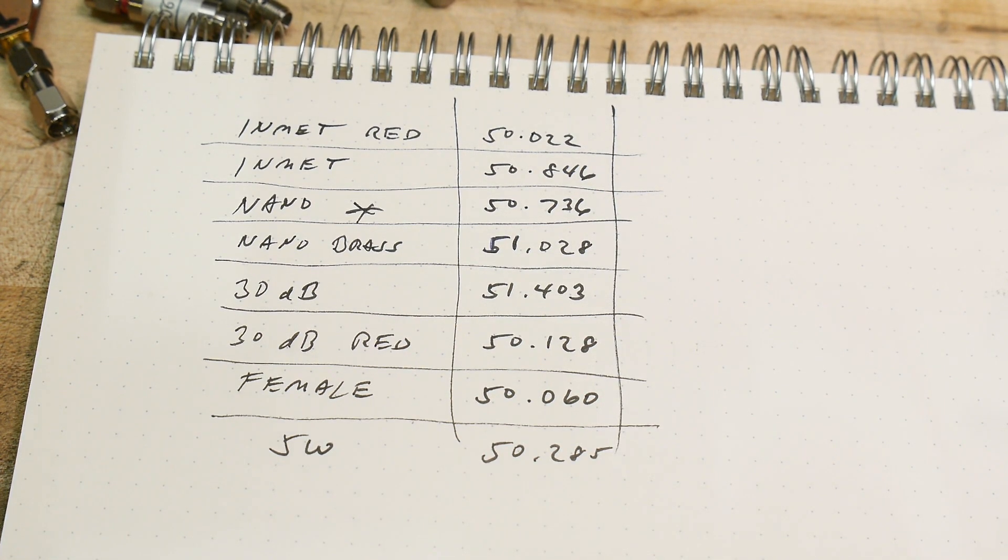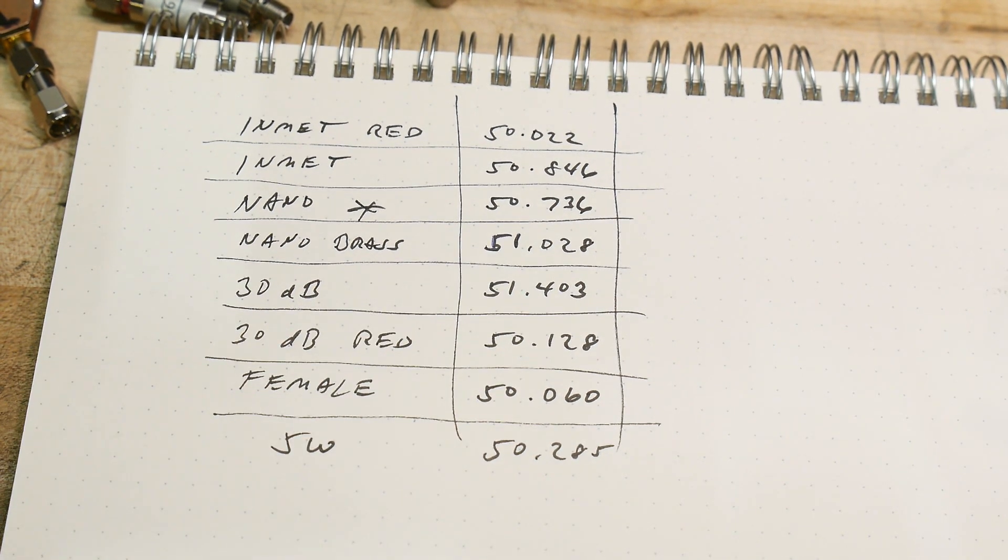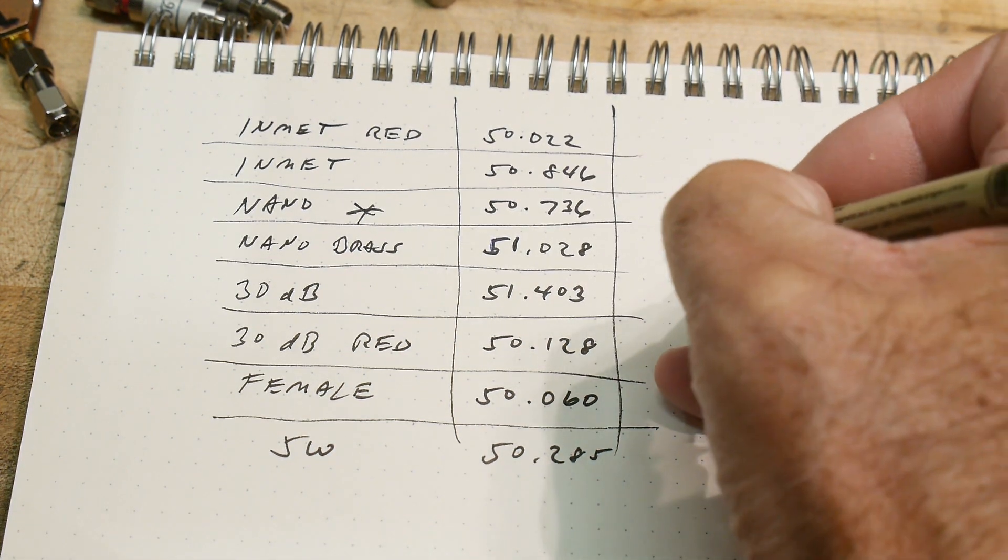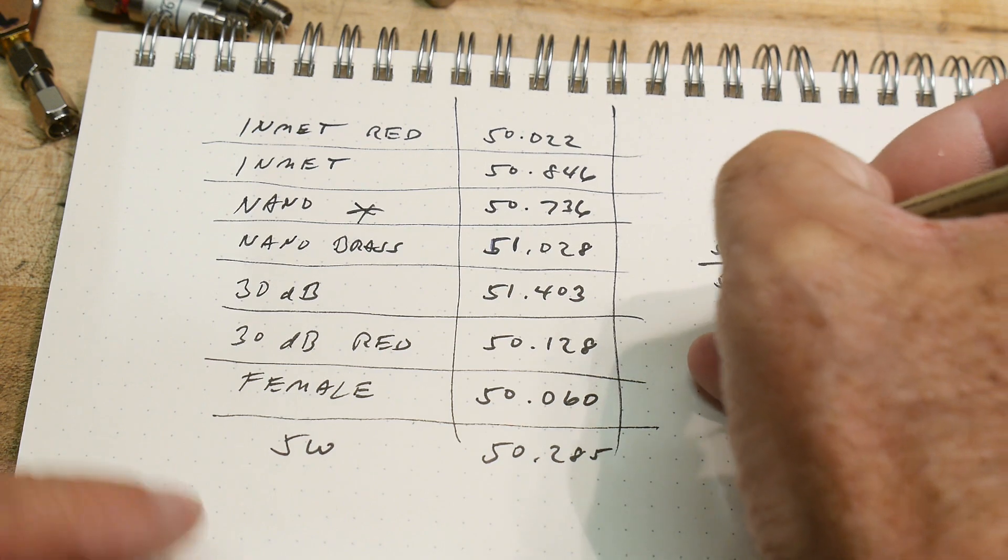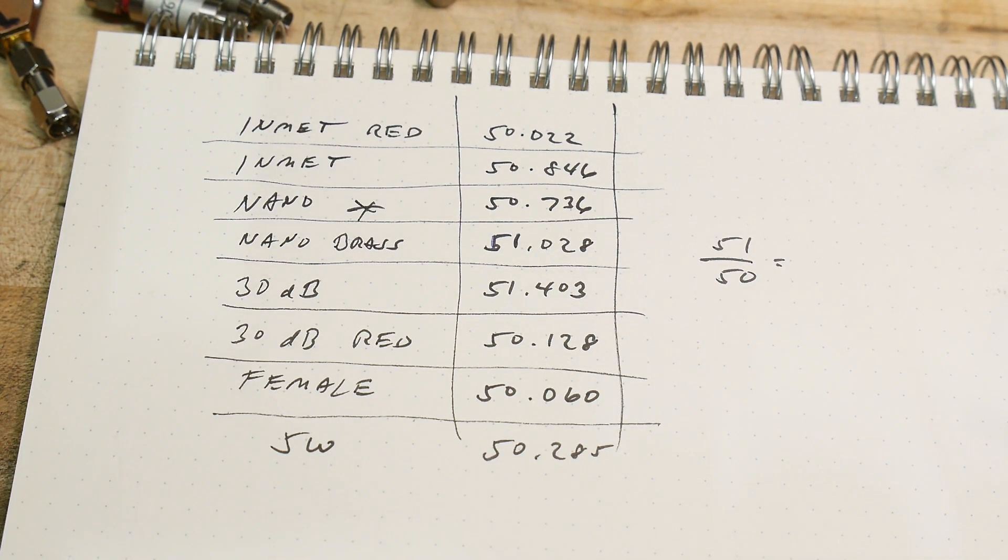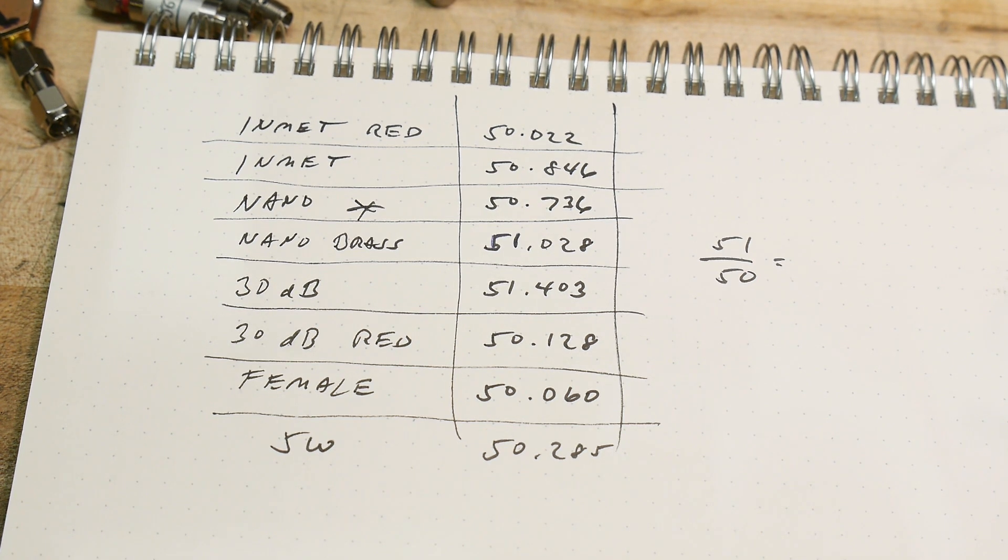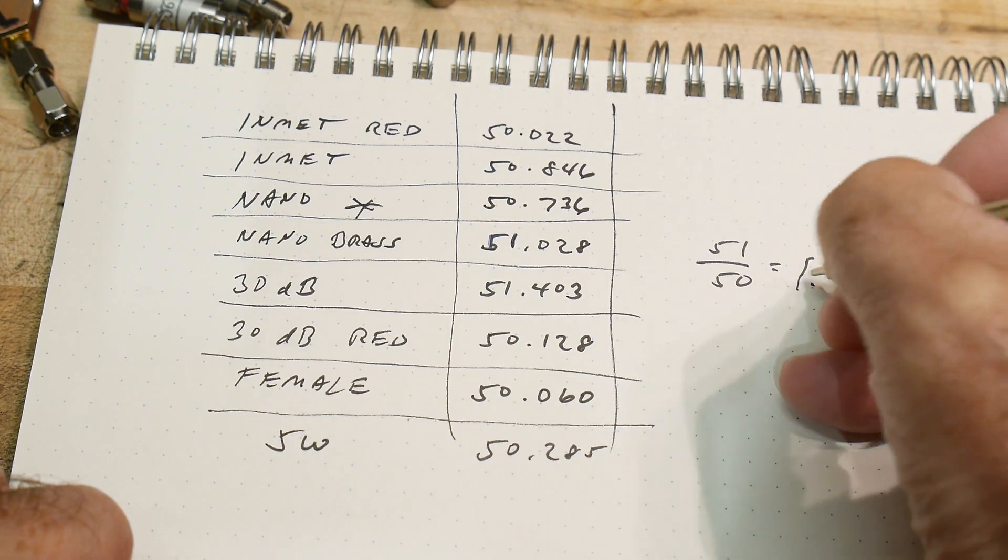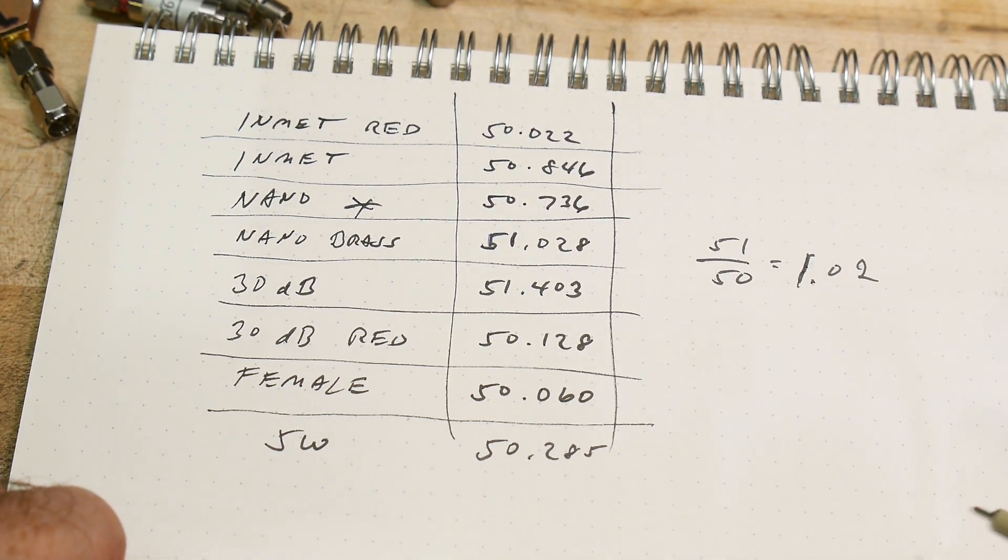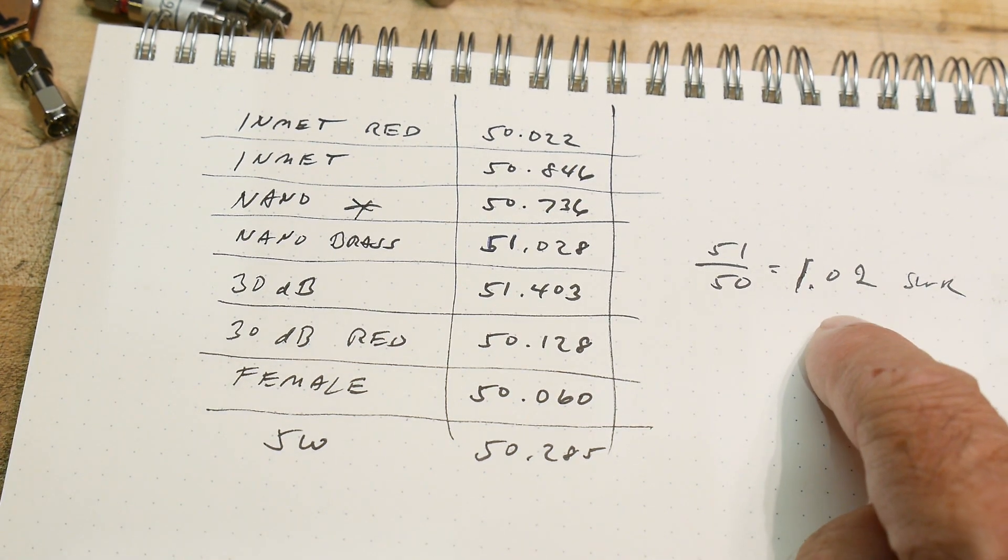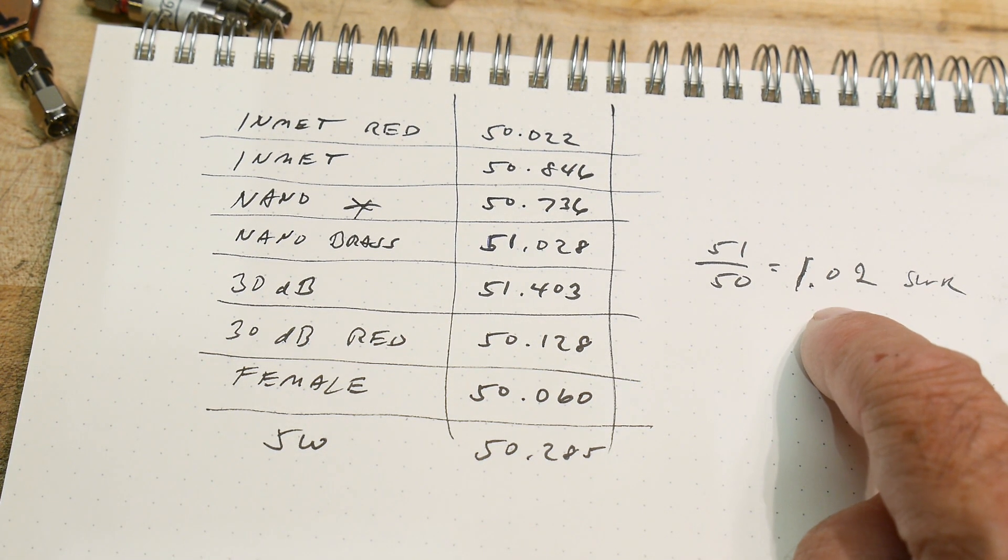So you're going to say, oh, well, 51 is going to be terrible. That's going to be a terrible cal factor. If we do this division 51 divided by 50, that's equal to 1.02. This is the SWR. So 1.02 SWR is actually really, really, really, really good.